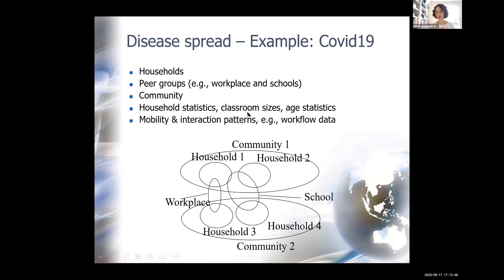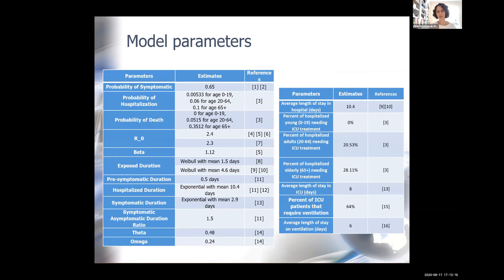We also model these interactions with different probabilities of disease transmission. If you live with someone in the same household, the chances of transmission are much higher compared to community interactions. A lot of data goes into populating this portion of the model in terms of how these interactions take place in practice.